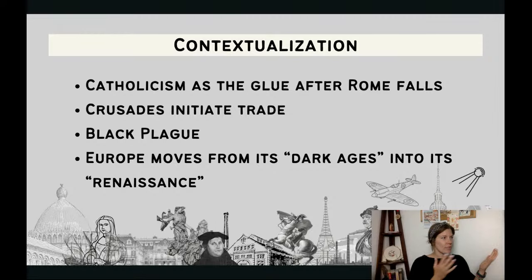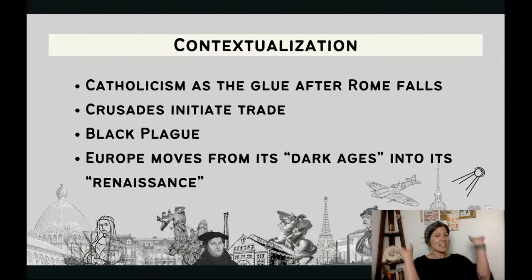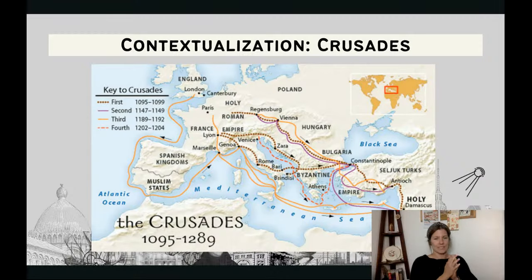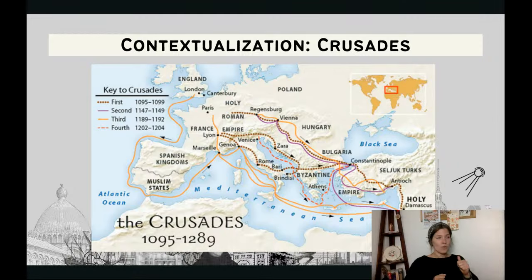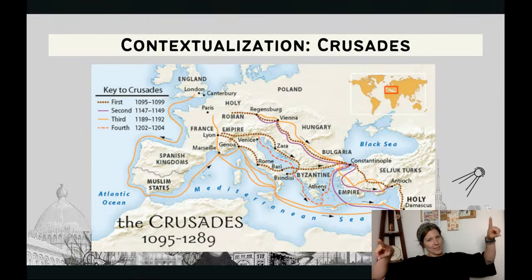Rome falls around 474–476. The thing that fills that political void is Catholicism — people become united by a common religion rather than a big empire. Europe becomes increasingly shut off from trade during its dark ages or Middle Ages. The thing that brings them out of the dark ages is the Crusades — these holy wars to take back the Holy Land for the Christians, which were ultimately unsuccessful in long-term Christian control of the Holy Land.